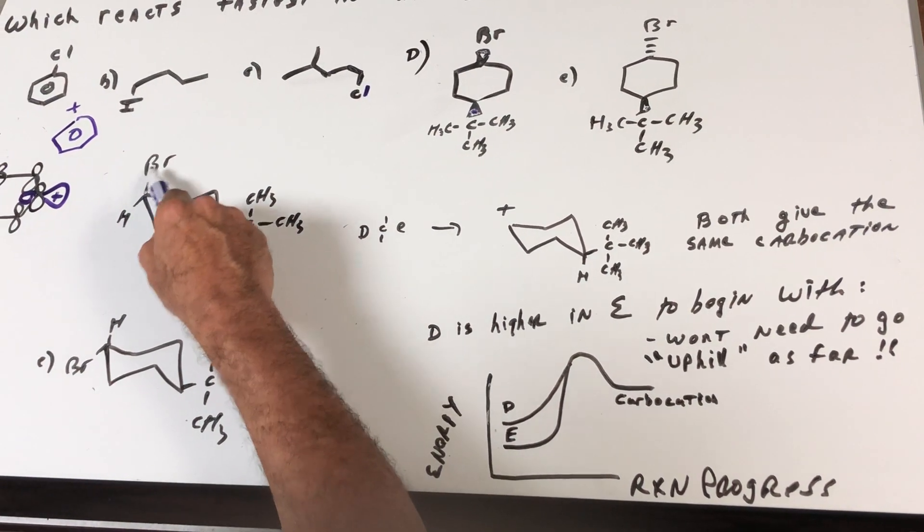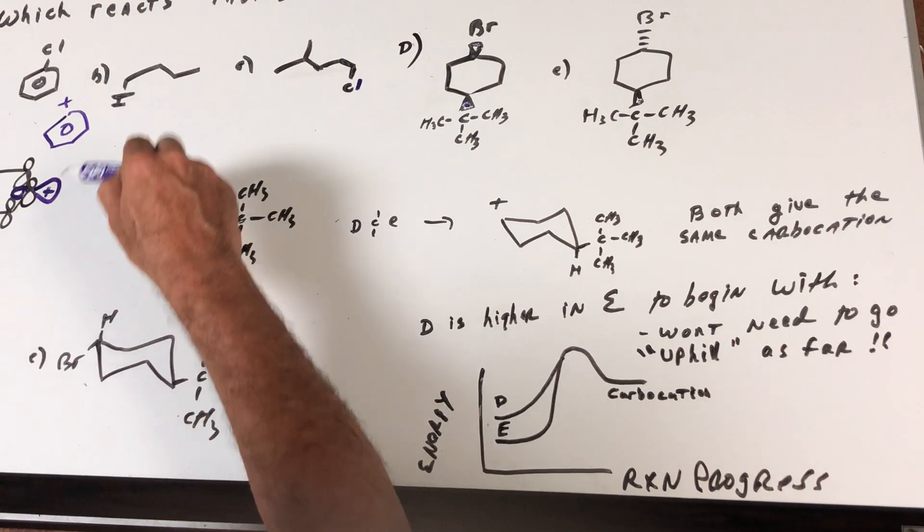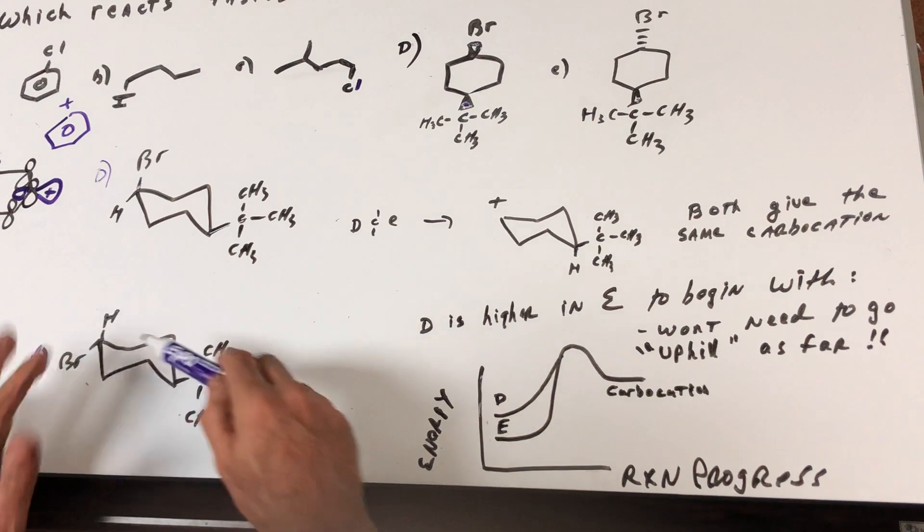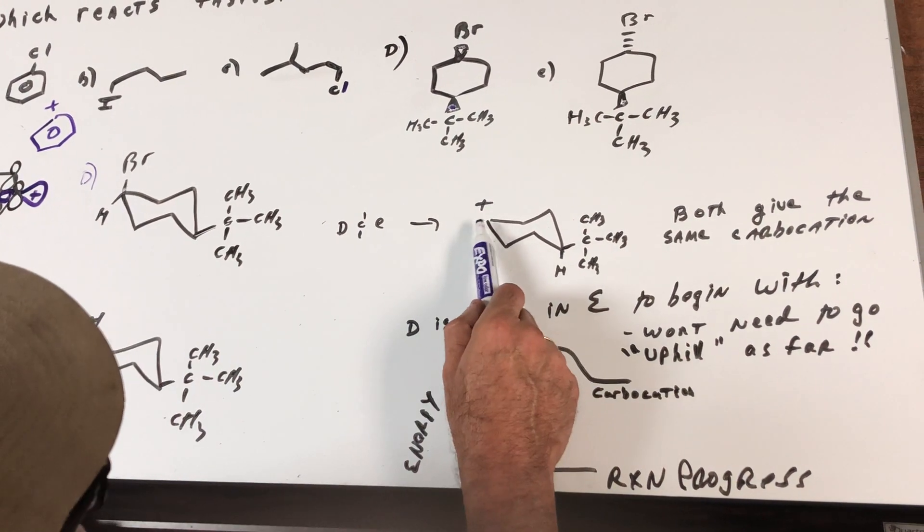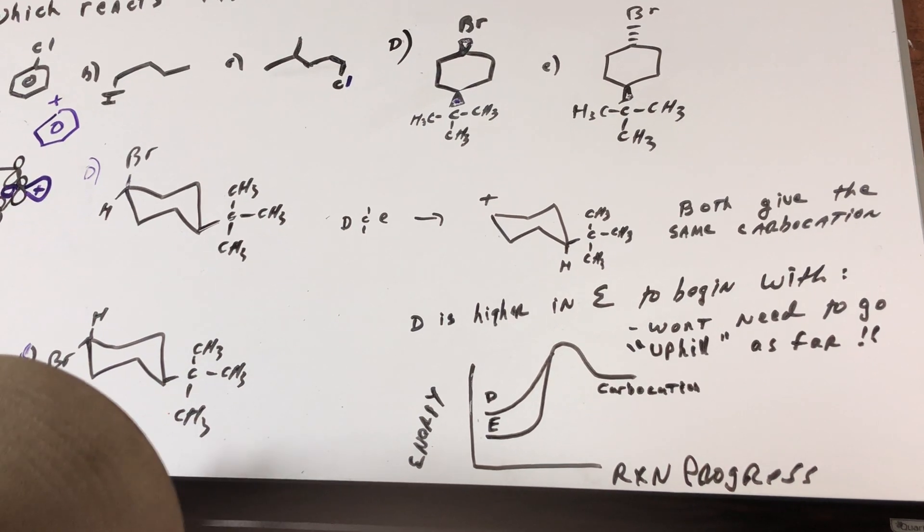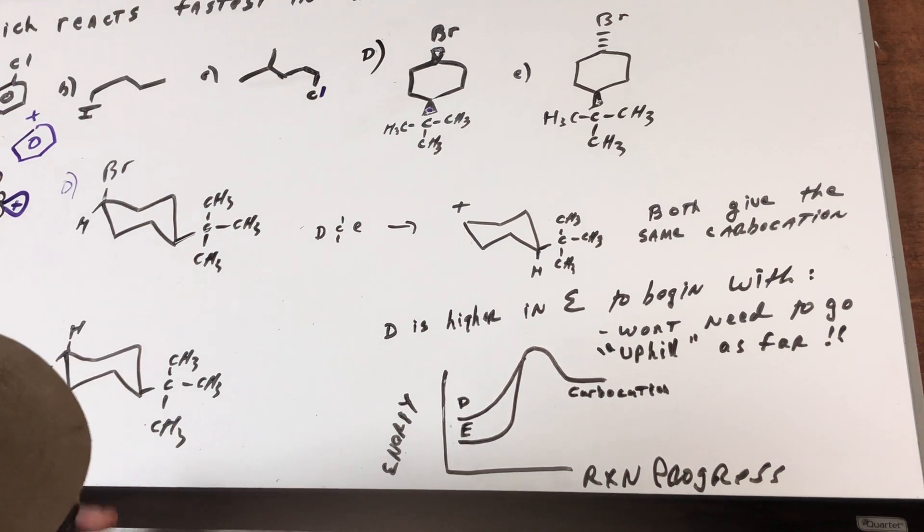So when you lose the bromine you would form from both choices D and E—this is D and this is E—both of these choices would give a secondary carbocation. They both give the same carbocation, and you're very inclined to think that the rates would be the same, but be careful.